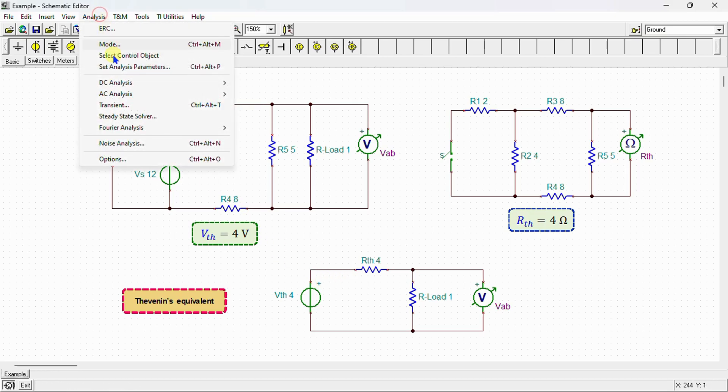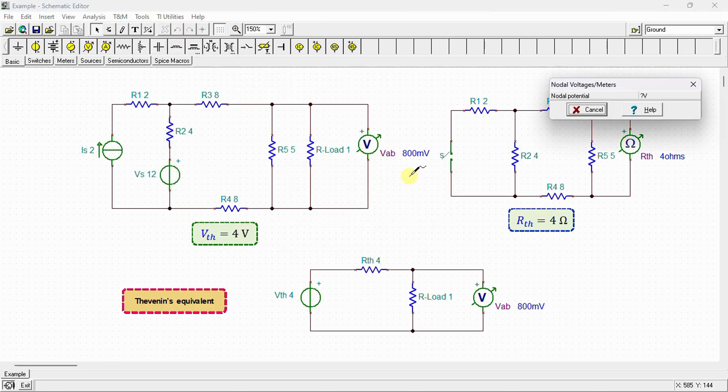Let's move on to analysis. DC analysis calculates nodal voltages. We can see here that the voltage across the load is equal to 800 mV in the original circuit, and is equal also to 800 mV in the Thevenin equivalent circuit.